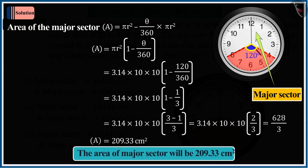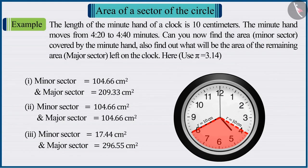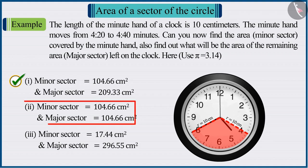Therefore, we can say that the area of major sector will be 209.33 square centimeters. Hence, option 1 is the correct answer.